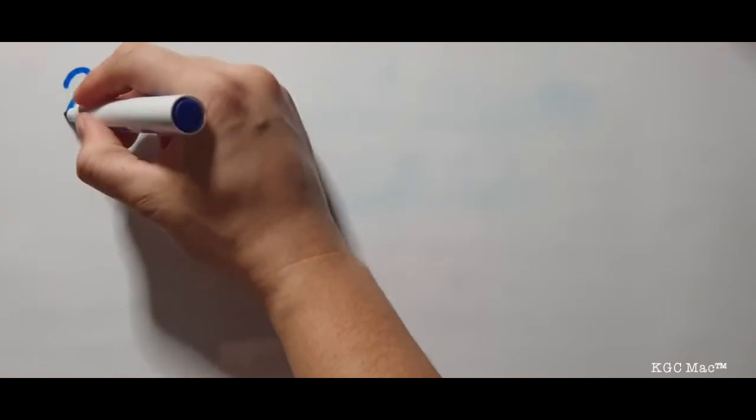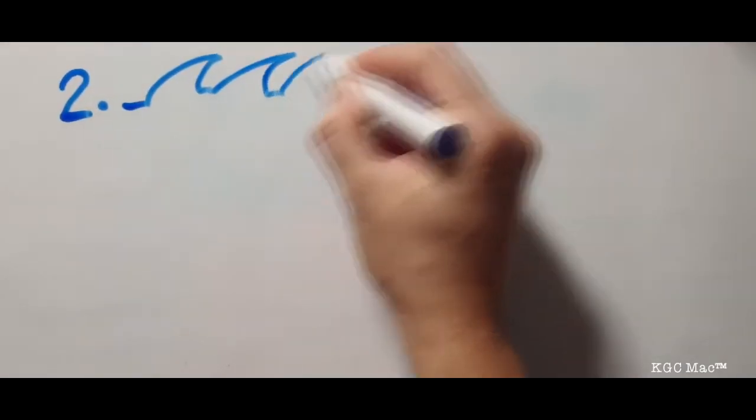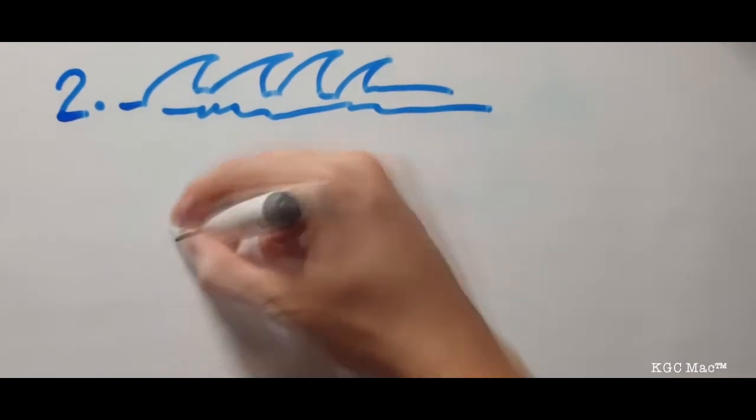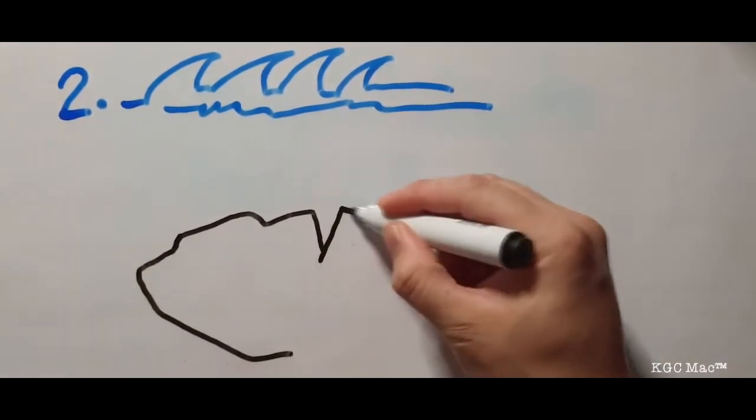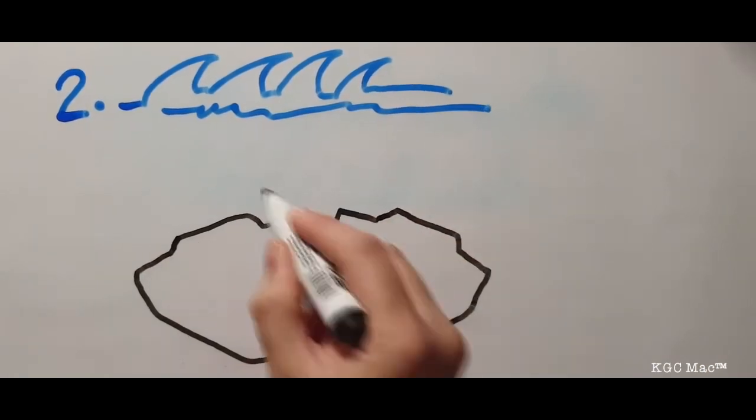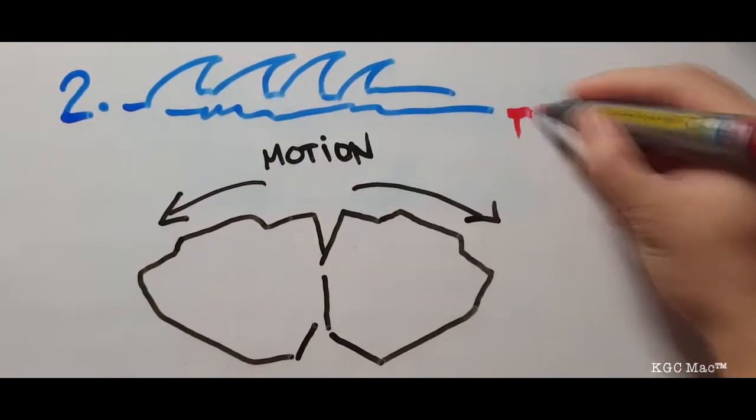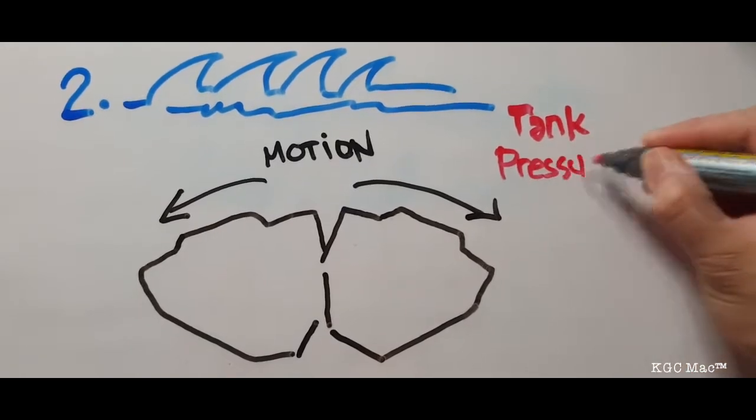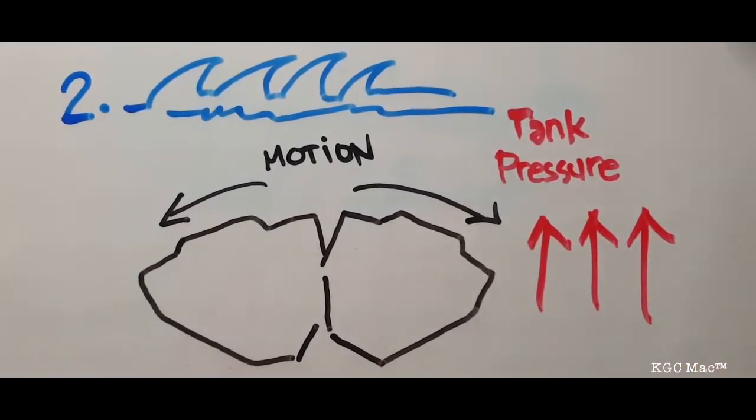Next factor that affects the tank pressure is the sea condition. Sea condition causes the ship to do motions which result in sloshing of cargo inside the cargo tank. Due to sloshing, frictions between molecules generate heat which rises the tank pressure.